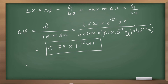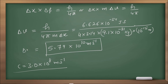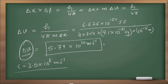Now, the velocity of light is only 3 × 10⁸ meters per second. This delta v — the uncertainty in velocity — comes out to be greater than the speed of light. This means the electron cannot exist in the nucleus of the atom and must be part of the extra-nuclear portion, because an uncertainty in velocity greater than the speed of light is impossible.